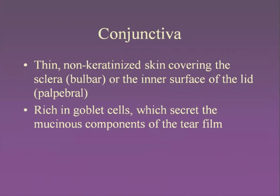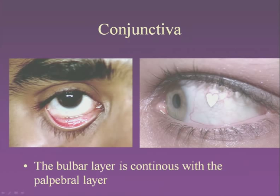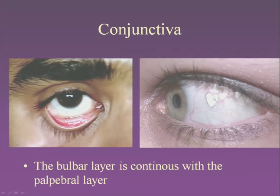The conjunctiva is the skin of the eye — it's non-keratinized. The portion on the eyeball itself is called the bulbar conjunctiva, and the part on the back of the eyelid is called palpebral; they're connected in the corner, so it's impossible to lose anything behind the eye. This skin is rich in goblet cells which secrete mucin. Here's an example of the conjunctiva with a surgical platinum implant placed beneath the bulbar conjunctiva — you can appreciate how thin and translucent it is.